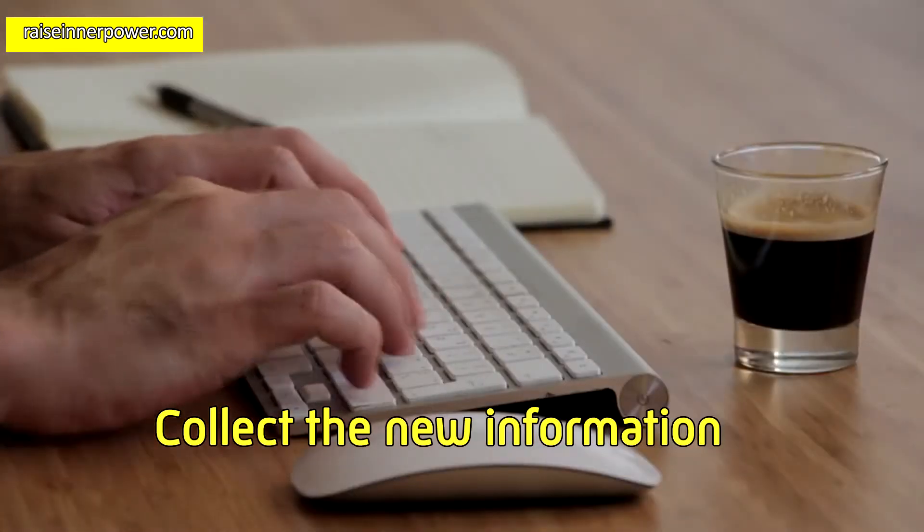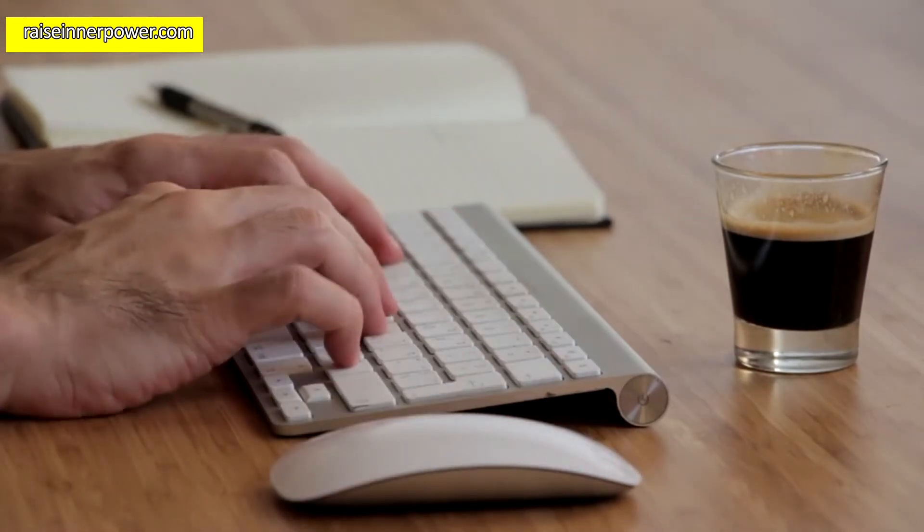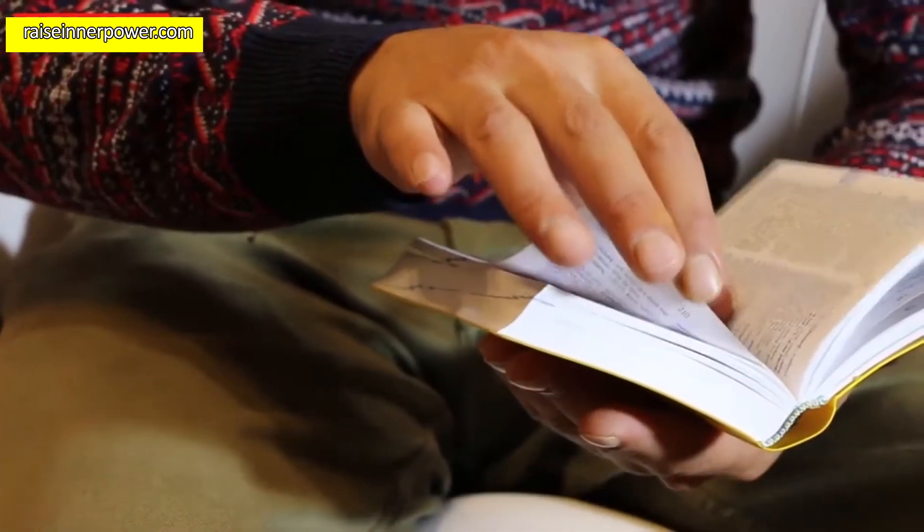Collect new information. If the brain doesn't know what to do, try to obtain new information and knowledge. The more you know and can do, the faster you think.